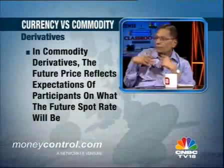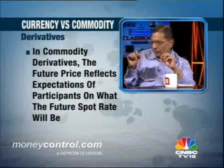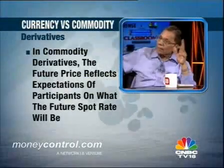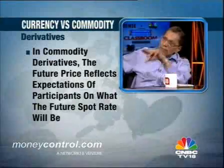Arbitrage-free pricing is the basic principle on which the futures price gets determined in financial markets, whether it is equities, currencies, etc. On the other hand, commodity derivatives stand on a different footing. In commodity derivatives, the futures price is not the arbitrage-free price. In fact, the futures price basically reflects the expectation of participants about what the future spot rate will be, so it is not arbitrage-free pricing. Therefore, quite often in commodity markets, the futures price is cheaper than the spot price — sometimes higher, sometimes lower.